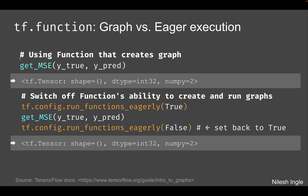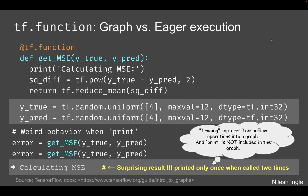Above this line of code, if you write tf.config.run_functions_eagerly(True), this will run as a regular Python function and we'll get the output as shown below. After this is done, we want to remember to set it back to false, as shown in the line below. Now let's look at another case where we are using tf.function.